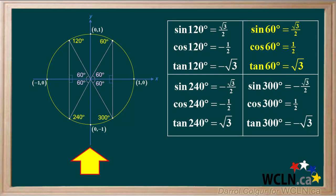Here are other angles with a reference angle of 60 degrees that have exact values. These include 120 degrees, 240 degrees, and 300 degrees. Using the values of trig functions for 60 degrees and knowing the signs of sine, cosine, and tangent in each quadrant will help you remember these.